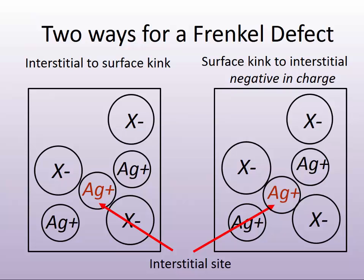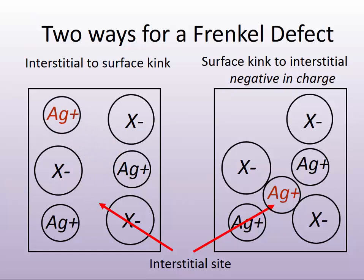We can also have the opposite: a silver ion moving from an interstitial site onto the surface. Both of these have impact on the development of what will later come to be known as a latent image. Building up to a silver image requires the conductivity and the mobility of these silver ions within the crystal lattice structure.